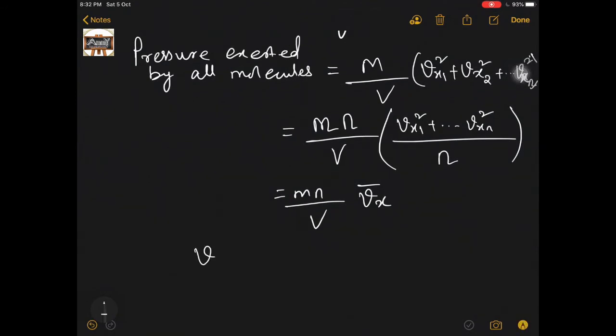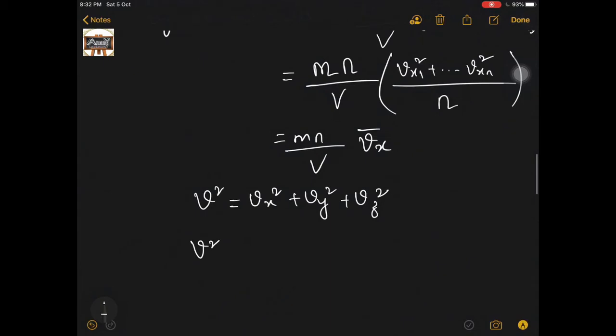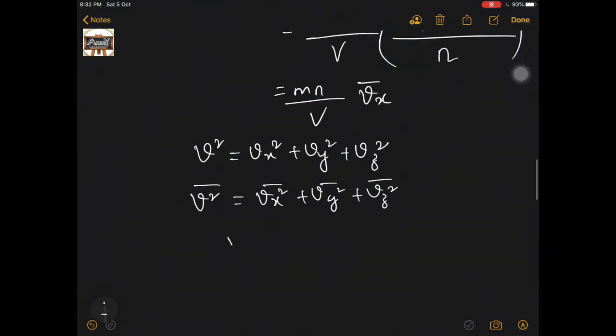As I have already written before, I will make use of this expression here. V̄² - if I take the average of this velocity, I have to take average of these also. And it is seen that the value of average of the squares of velocity of the molecule is equal along all the three axes.